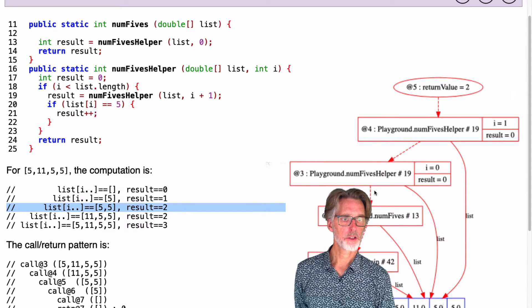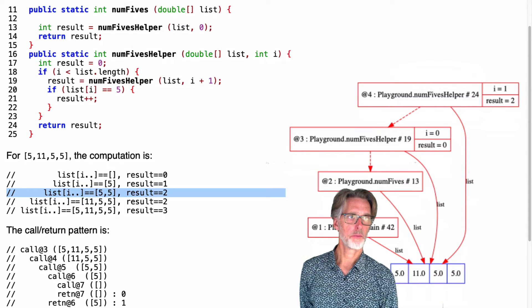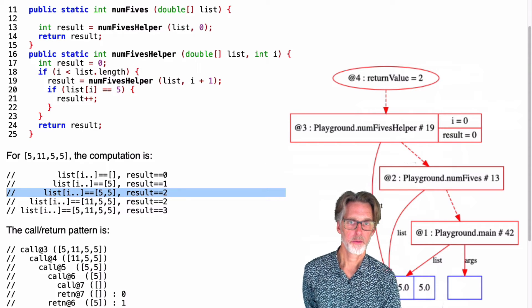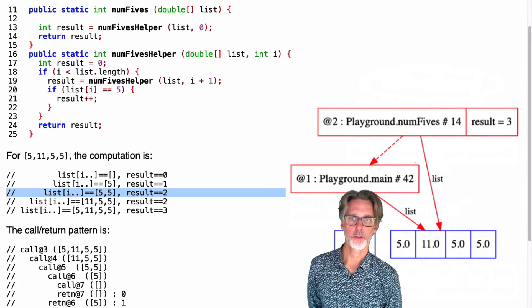That passes two back. At this time, we're actually looking at the 11, so we don't see anything interesting. So there's no increment, we just return two. And we keep going backwards like this until we get back to our main function with the result three.